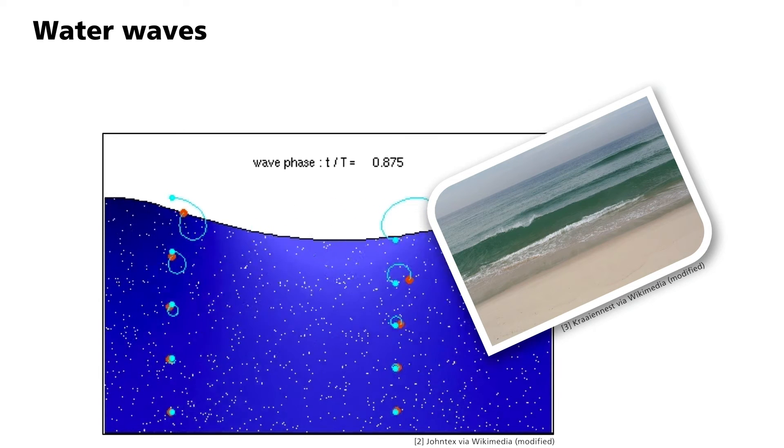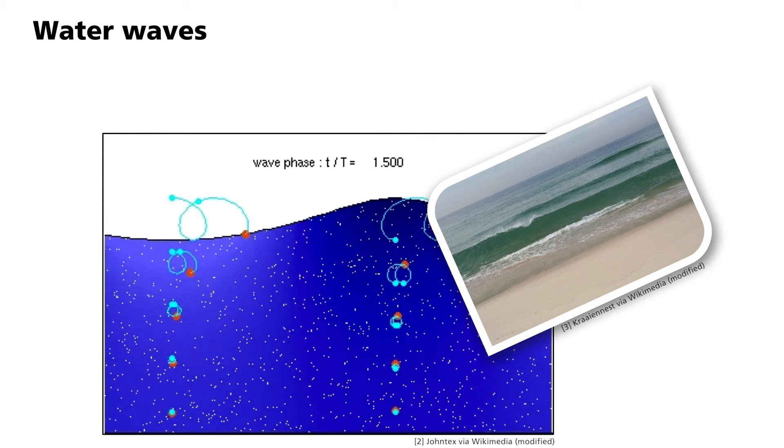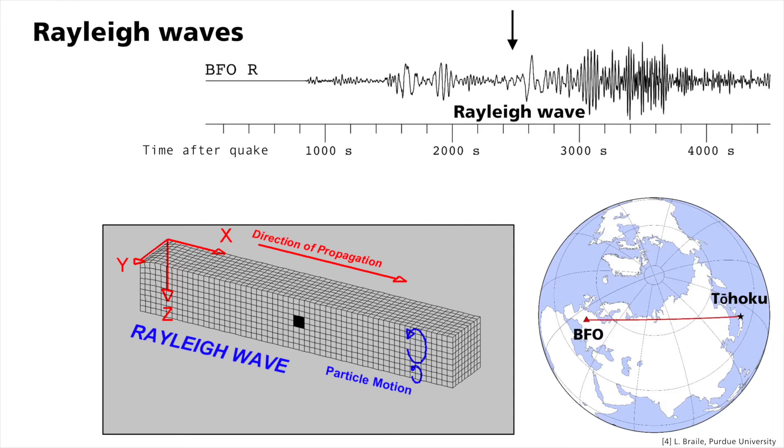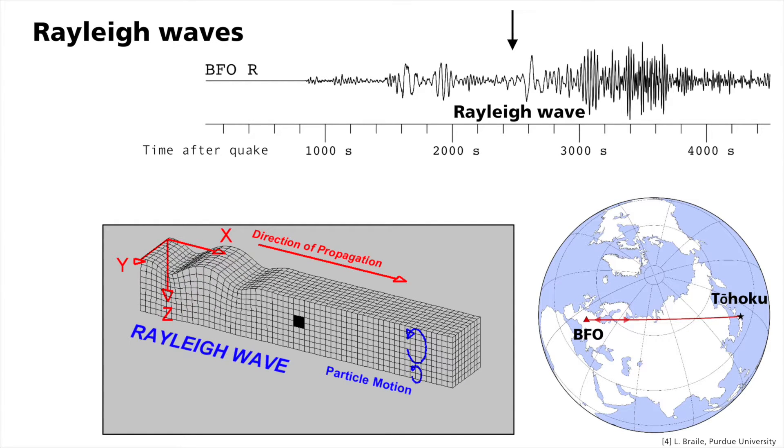However, in Rayleigh waves, it is the other way around. In this other representational form, you see the same elliptical movement, but this time against the direction of propagation, we call this retrograde.